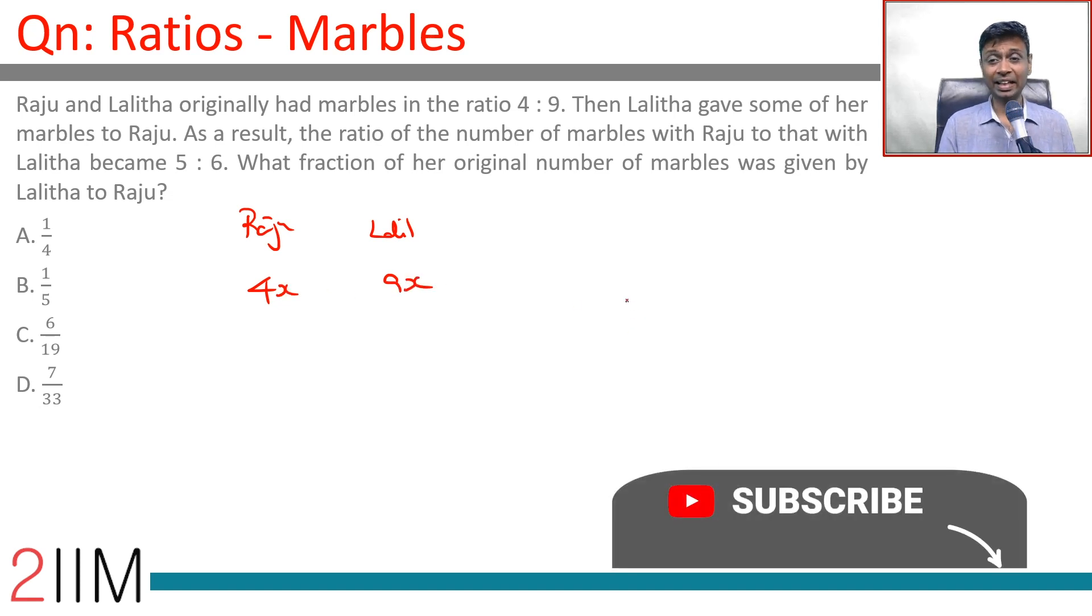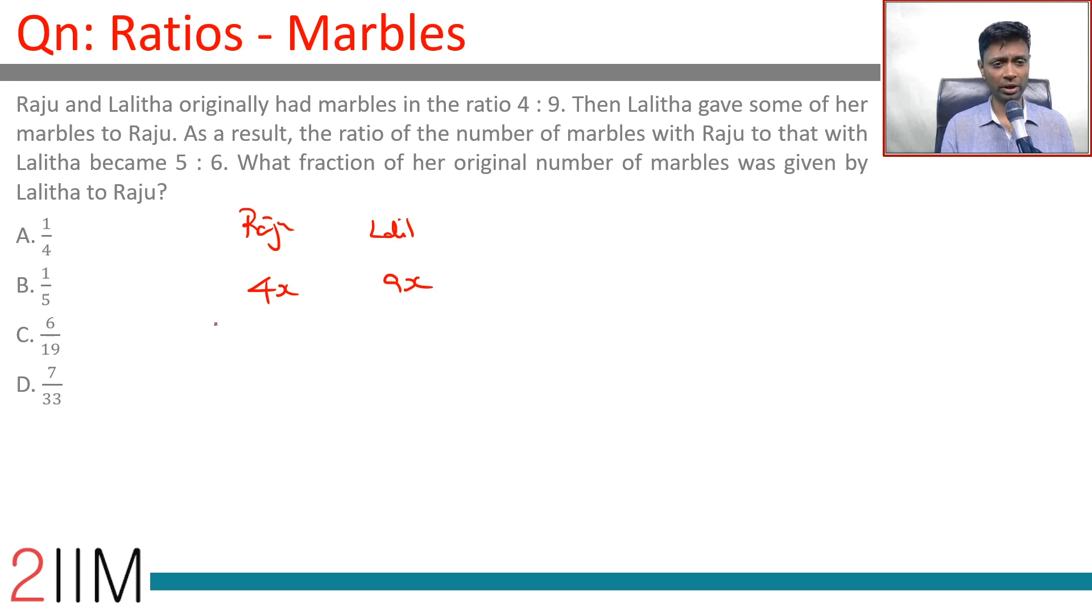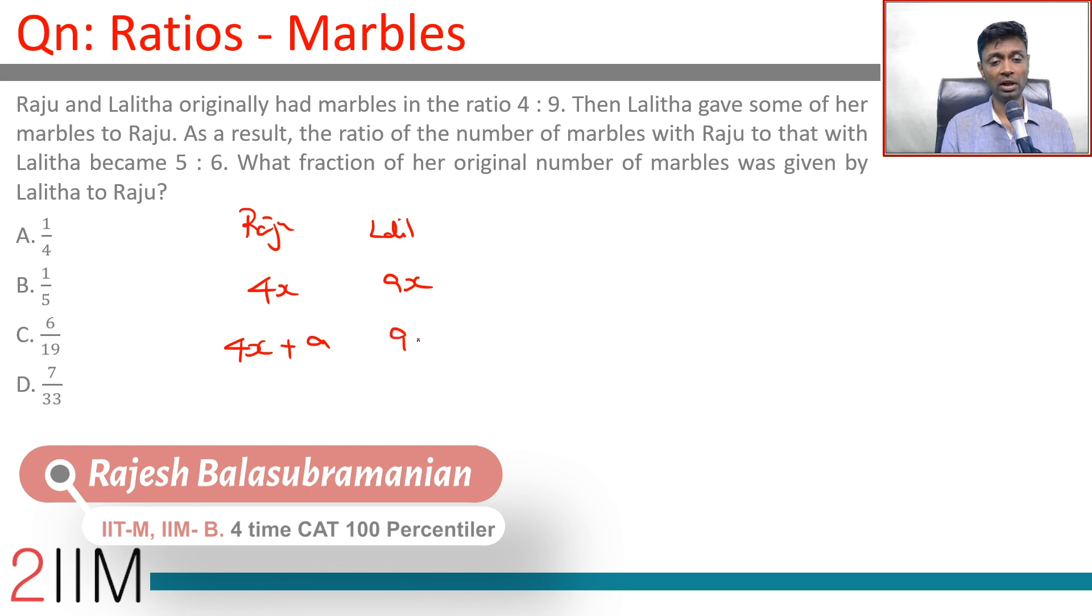Then Lalita gave some of her marbles to Raju. That means Raju will end up having some more, Lalita will have some less. Let's say Lalita gives A marbles to Raju.